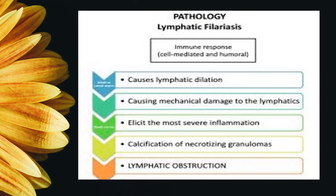This is the pathophysiology of lymphatic filariasis. The immune response system, which is cell-mediated and humoral, is sometimes not working. This would cause lymphatic dilation and mechanical damage to the lymphatics, which would then elicit severe inflammation and calcified necrotizing granulomas, eventually leading to lymphatic obstruction.